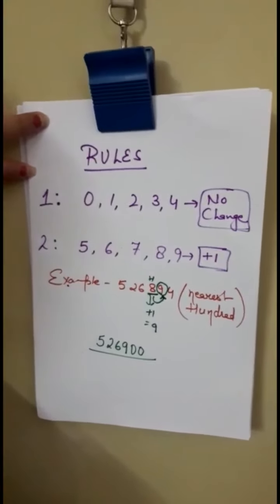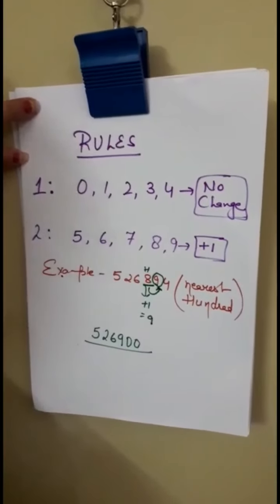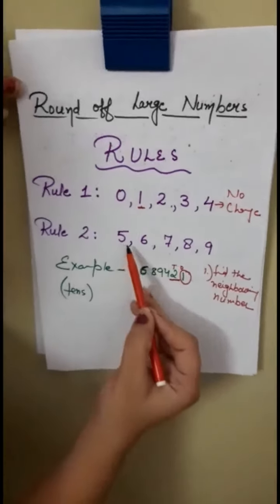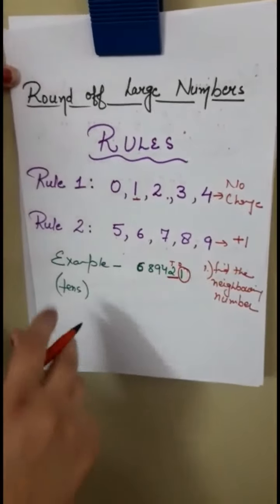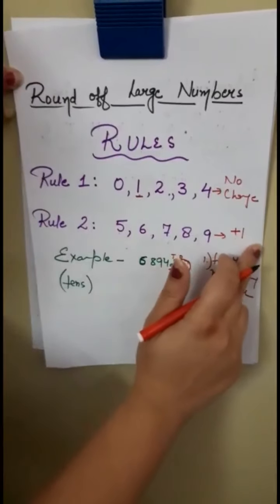And agar humare numbers 5 to 9 ke beech mein aate hai, then we add 1 to it. Yehi adhra ko 0 to 4 no change, 5 to 9 plus 1.